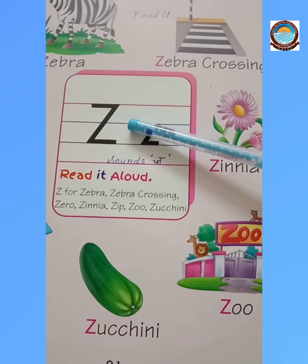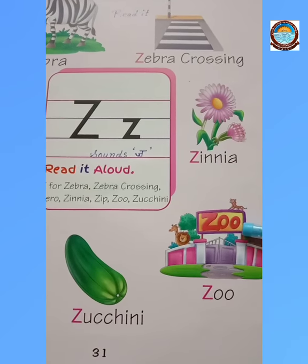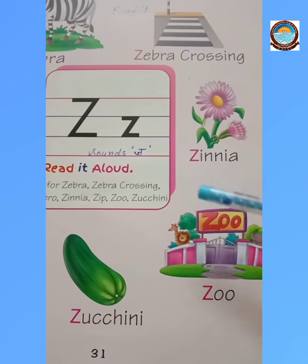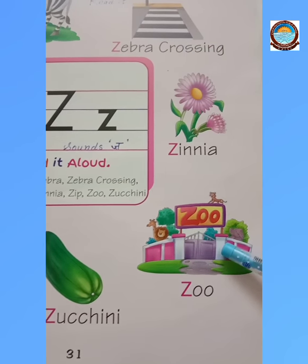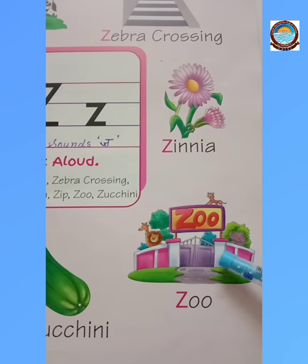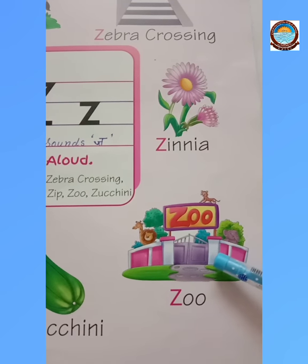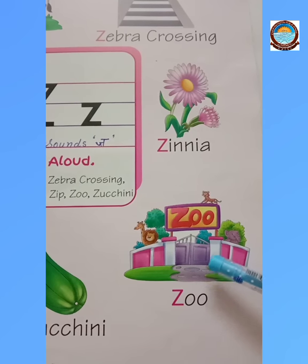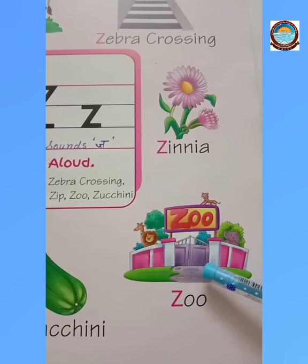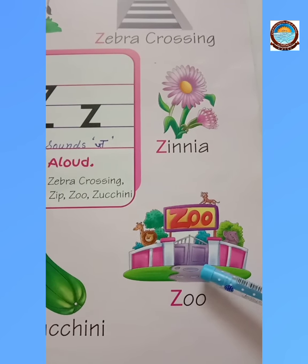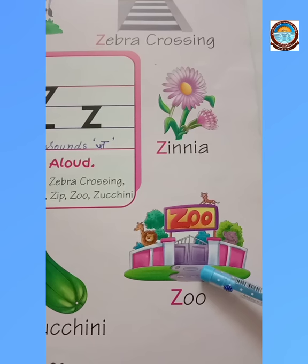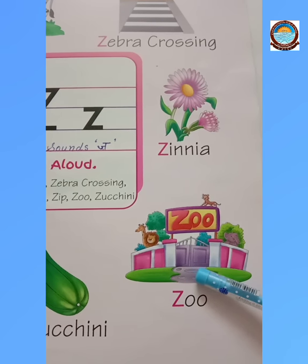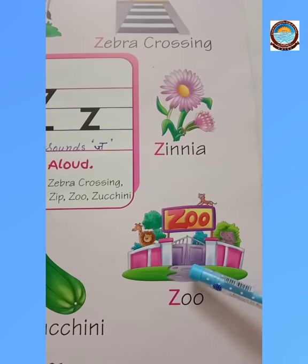Z — the zoo. Z, the zoo. Children, do you know what a zoo is? A zoo is a place where we can see all types of animals like lion, tiger, elephant, monkey, deer, crocodile, etc.